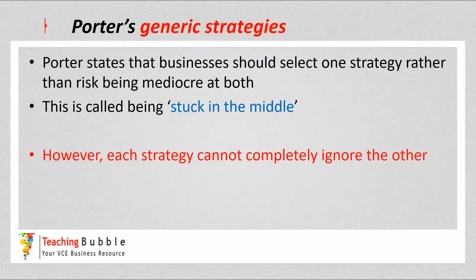Porter states that businesses should select one strategy rather than risk being mediocre at both. They don't want to implement the differentiation strategy and also try to be the low cost producer and implement cost leadership. He calls that being stuck in the middle, where they risk being mediocre at both.